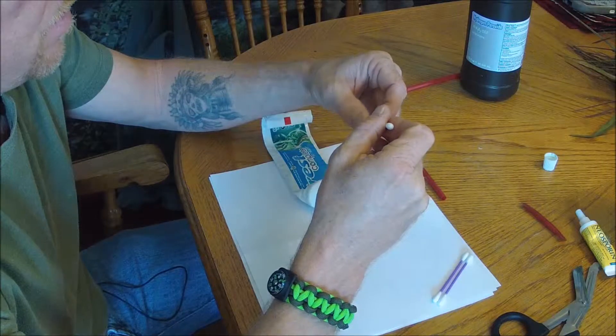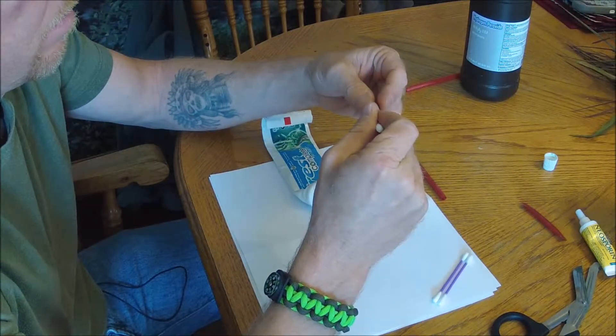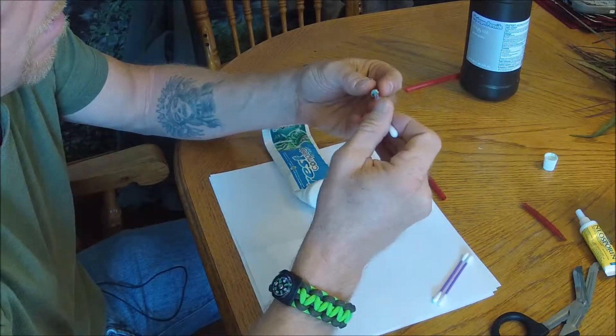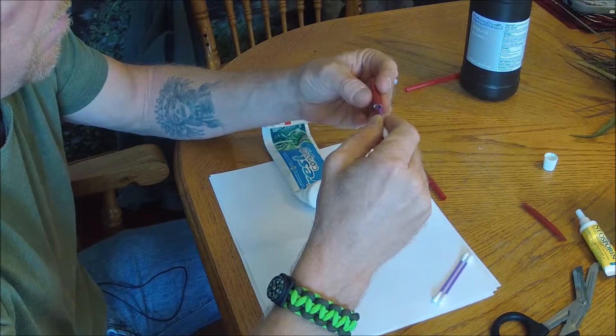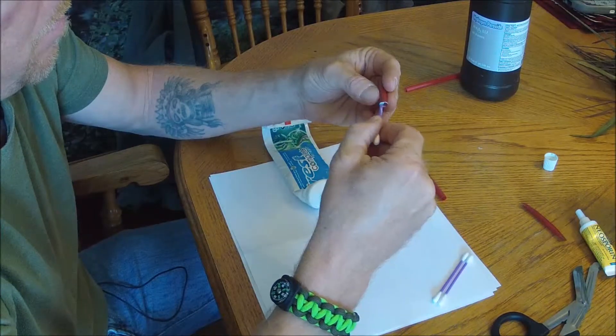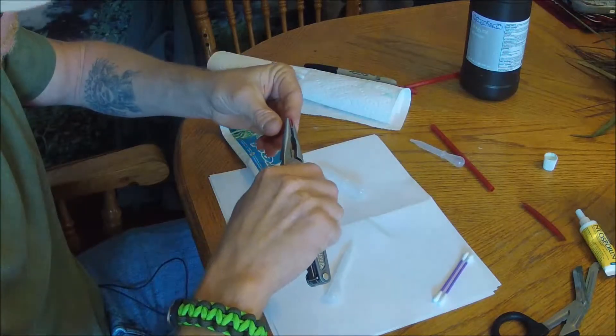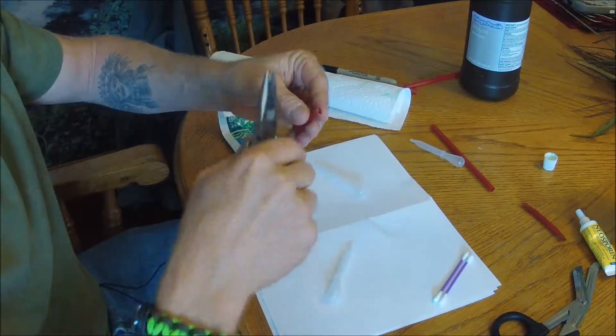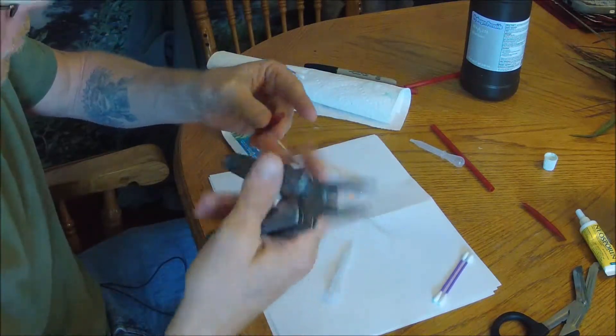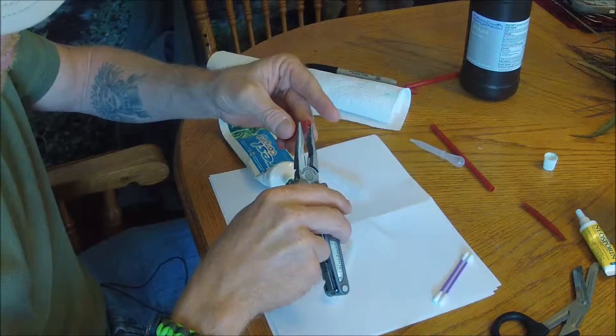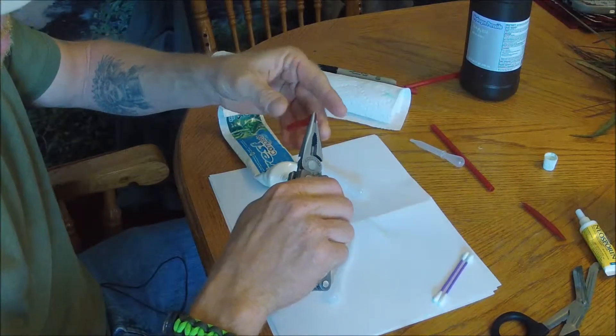You're going to start shoving it down there as best you can. Now the thing about toothpaste is, according to my dentist anyway, you don't need more than a pea size each time you brush your teeth. So you just keep that in mind, you're not going to put huge amounts of this stuff in here. Okay so you want to squeeze one end of it here and the end that you stuffed it into.